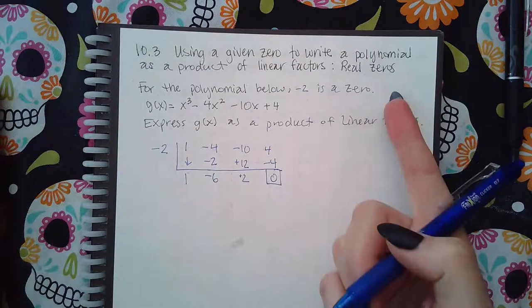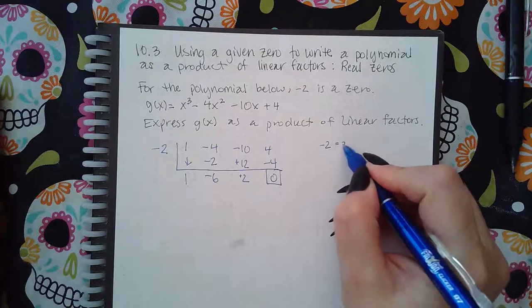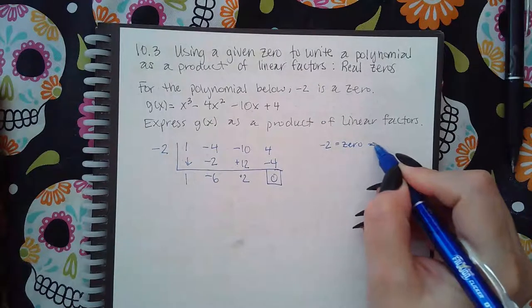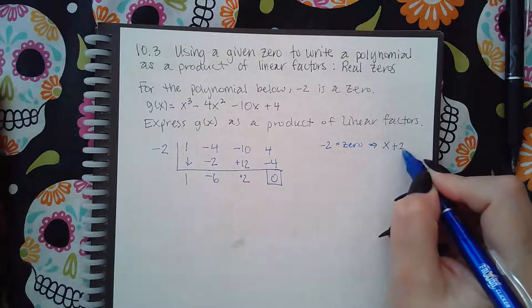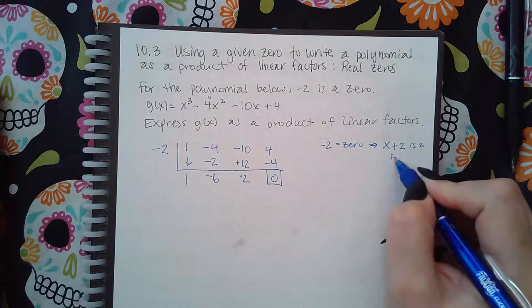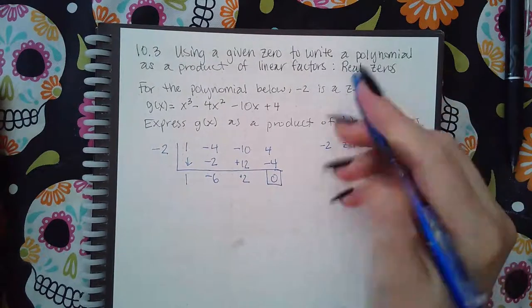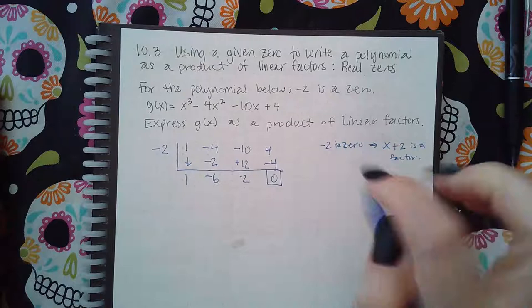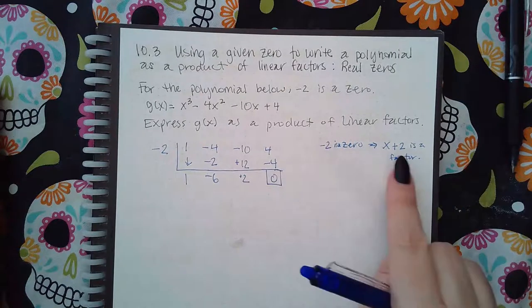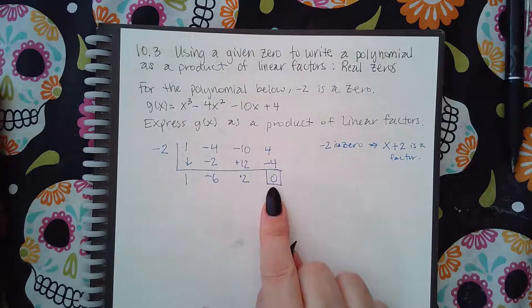Because if it is a zero, negative two being a zero means that x opposite sign plus two is a factor. So if this guy is a zero, then x plus two is a factor. And it is a zero because I got the remainder zero.